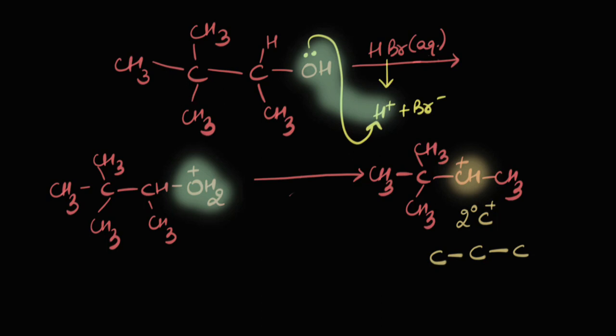If I try and move it to this carbon, it would become a 1 degree carbocation. I don't want that. I don't want it to become less stable. So, what should I be doing? I see a carbon here. But I don't see any hydrogen attached to it. There is no possibility of hydride shift. Well, there is a possibility of alkyl shift.